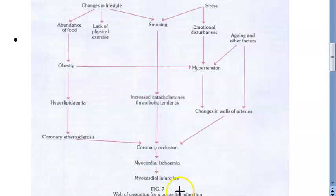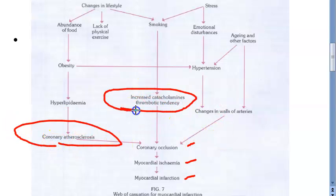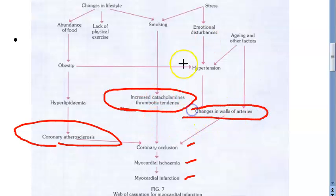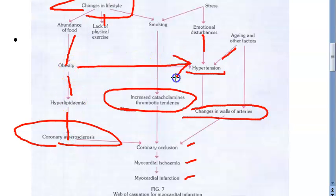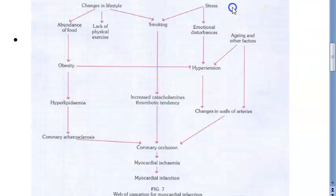To summarize: myocardial infarction ← myocardial ischemia ← coronary occlusion. Occlusion is caused by atherosclerosis (from lifestyle: abundance of food, lack of physical exercise → obesity → hyperlipidemia), thrombotic tendency and increased catecholamines (from smoking), and changes in arterial wall from hypertension (due to stress/emotional disturbance or age). Obesity also contributes to hypertension. This is the web of causation for myocardial infarction.